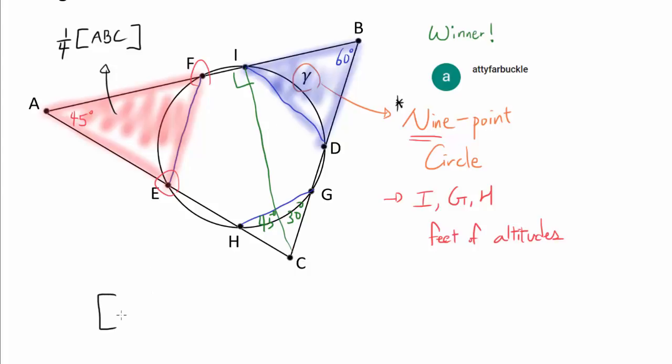So we want to write the area of triangle BID, so the blue triangle, in terms of triangle ABC. So we want to write it as triangle ABC times something.